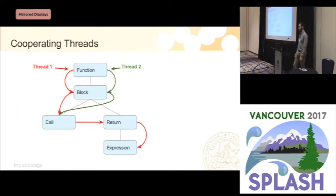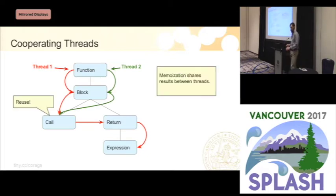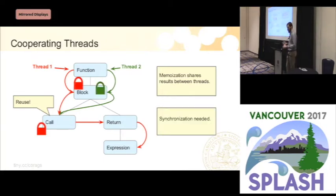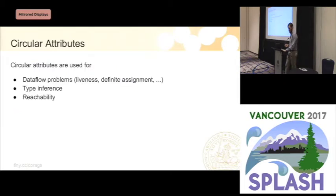The idea of concurrent attributes is also that we can reuse work that another thread has done. If we have two threads evaluating attributes in the same AST, one thread could reuse results from the other. This means we have to share data between threads, which introduces the problem of synchronization. For most attributes this is quite easy — you could even use locks. However, it gets more complicated if you want to support circular attributes.